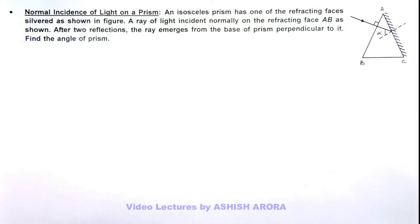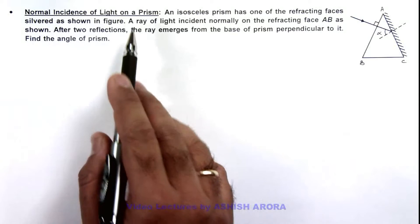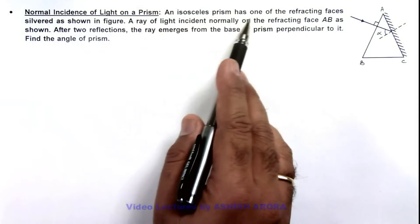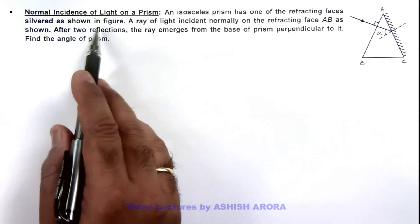In this illustration we will discuss a situation when a normal incidence of light occurs on a prism. Here, we are given that an isosceles prism has one of the refracting faces silvered as shown in figure.